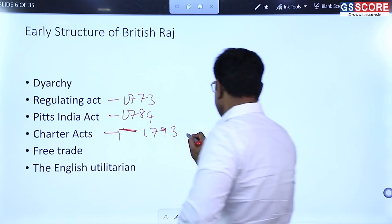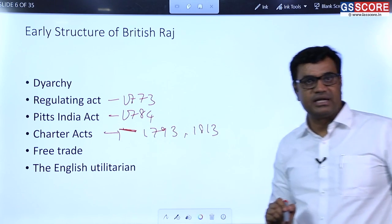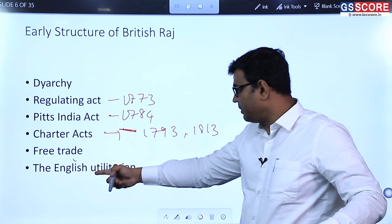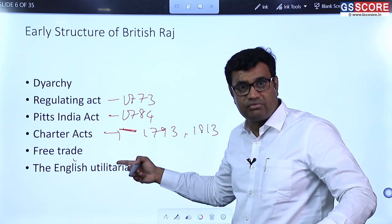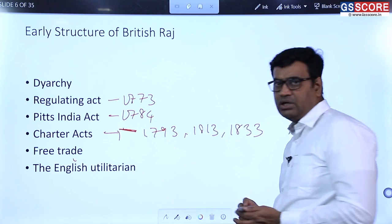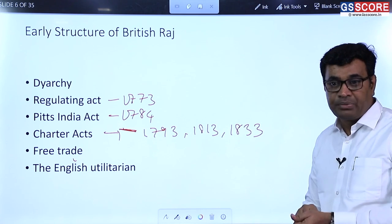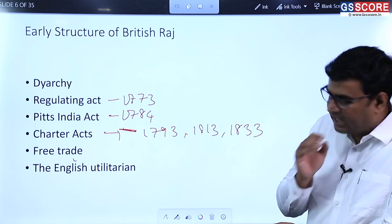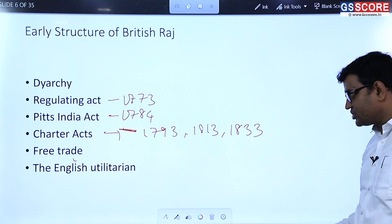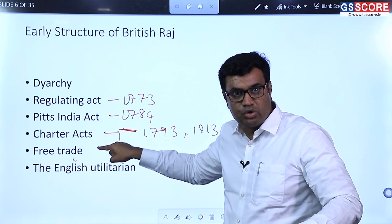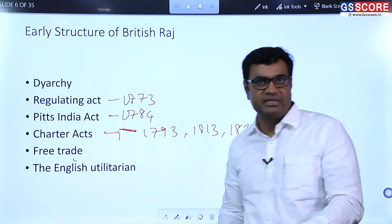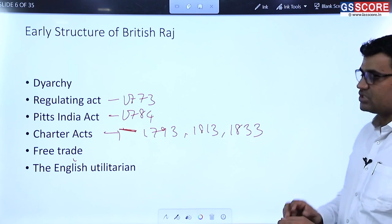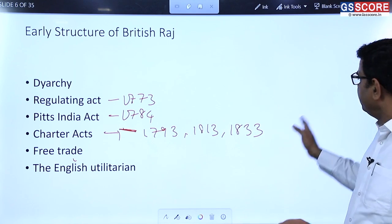A second Charter Act was enacted in 1813, abolishing the monopoly of the British India Company and promoting free trade — also demanded by English Utilitarians who believed in the greatest good for the greatest number. The Charter Act of 1833 completely abolished the Company's trading monopoly, including trade in tea and trade with China. These charter acts led to further changes in Indian administration, facilitated by the concept of free trade and English Utilitarian principles.